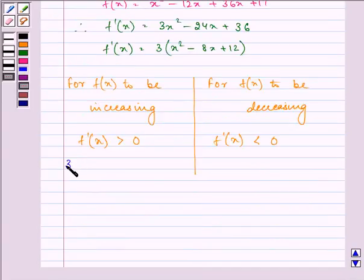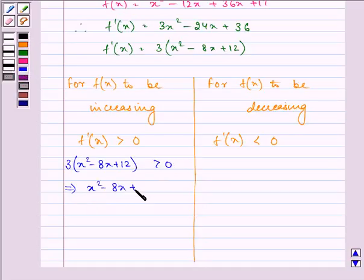So we have 3(x² - 8x + 12) greater than 0. This implies x² - 8x + 12 is greater than 0. This further implies, on splitting the middle term, we have two factors: (x - 2) and (x - 6), that is greater than 0.